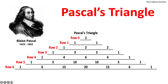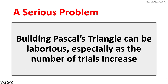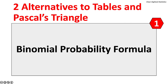Pascal's triangle is a triangular array of binomial probabilities. The rows list the number of trials. For an experiment of flipping a fair coin five times, the outcomes are on row five. There are a total of 32 ways of getting no heads, one head, two heads, three heads, four heads, and five heads. However, building a Pascal's triangle can be laborious, especially as the number of trials increase. There are two alternatives: the binomial probability formula or Excel's BINOM.DIST function.